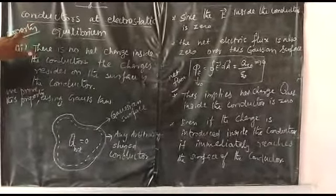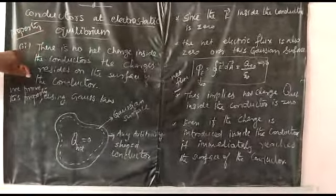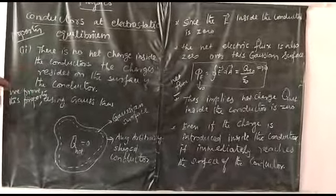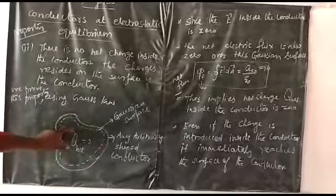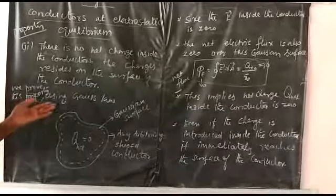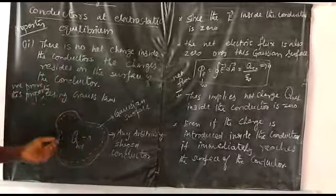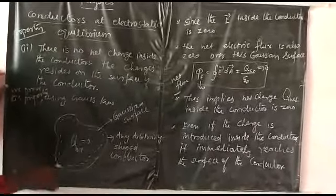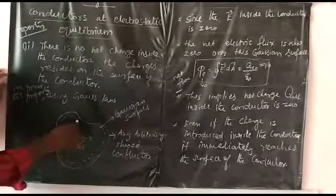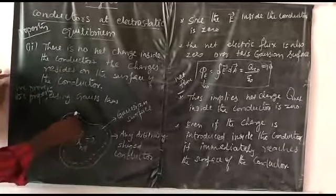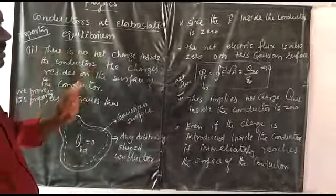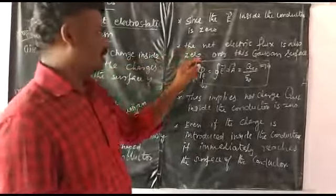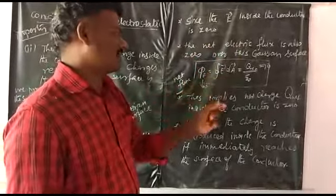Now we are going to discuss the second property of conductors at electrostatic equilibrium. There is no net charge inside the conductor — the charges reside only on the surface of the conductor. The charge is distributed only on the surface; inside the conductor the net charge is zero. We can prove this property using Gauss's Law. Let us consider any arbitrary shape of conductor and draw a Gaussian surface inside the conductor. Since the electric field inside the conductor is zero, by Gauss's Law the net electric flux through this Gaussian surface is also zero.